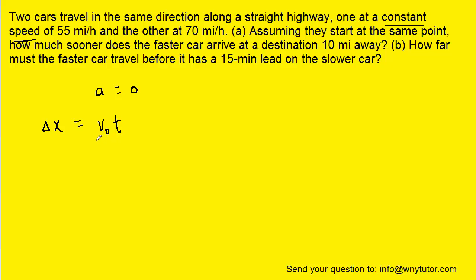And we can solve this equation for time by dividing both sides of it by the initial velocity. And so using this equation will allow us to calculate the time for both the 55-mile-per-hour car as well as the 70-mile-per-hour car.